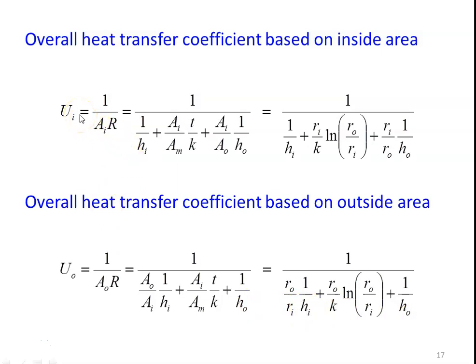In heat exchanger design, the overall heat transfer coefficient U value will typically be given directly. The overall heat transfer coefficient combines the inside convection resistance, the conduction resistance across the metal surface, and the outside convection resistance — three resistances combined together into one overall heat transfer coefficient.